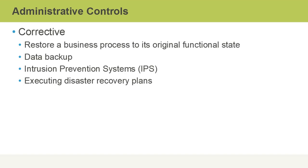Corrective administrative controls allow us to get things up and running. For example, restoring a business process to its original functional state, maybe after a server that supports that process crashes. Data backups are corrective administrative controls that we can use to restore data in the event of a problem. Intrusion prevention systems can also not only detect and report on anomalies, but take steps to prevent them from continuing — therefore, they're considered corrective and not just detective administrative controls.